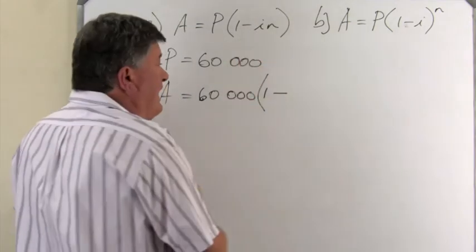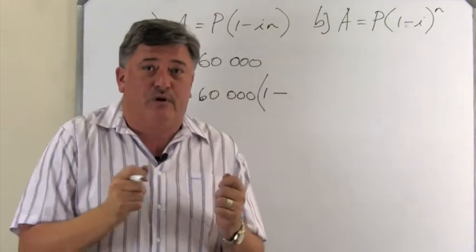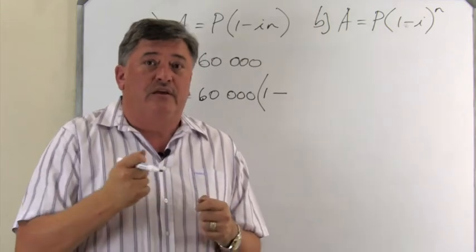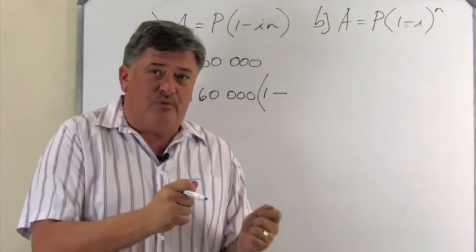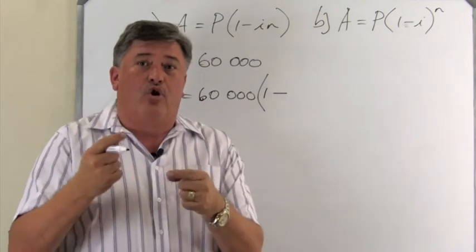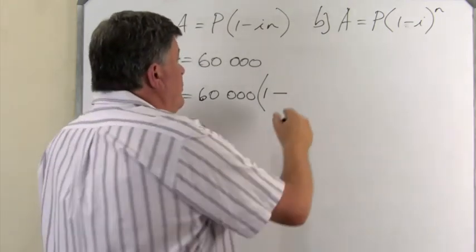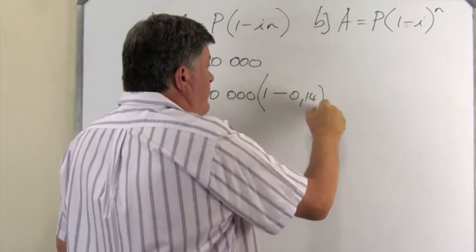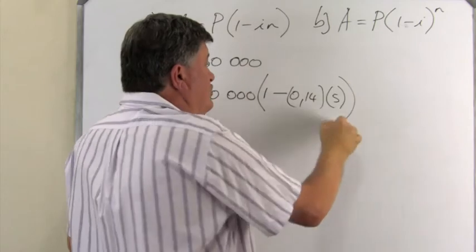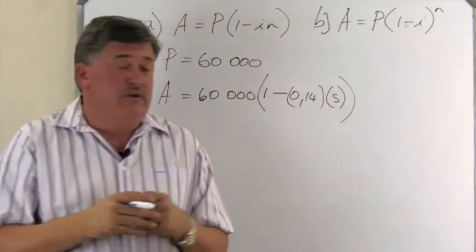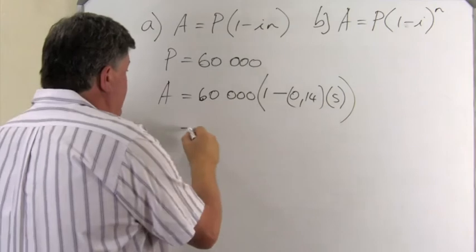Remember what we said, you can't substitute the interest rate as 14%. Remember what we said in grade 10, you must always divide by 100, which is 0.14, because we are going to multiply. We do it with brackets, always safe to do that.